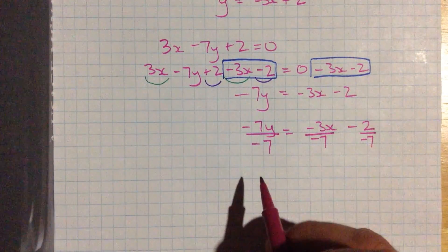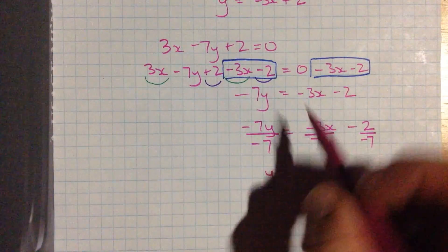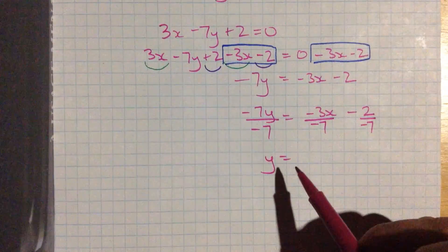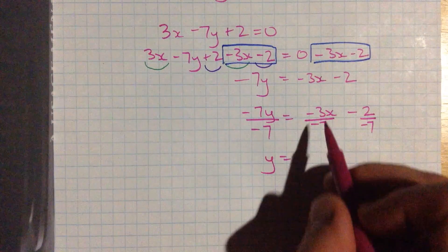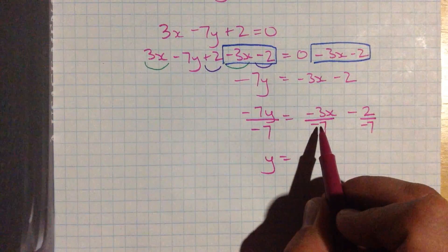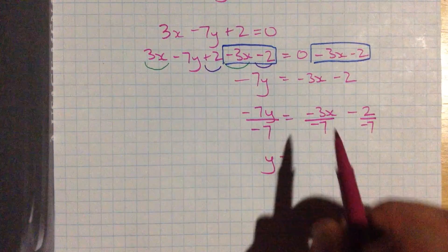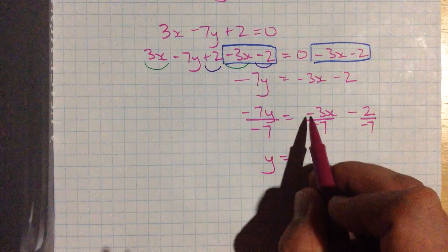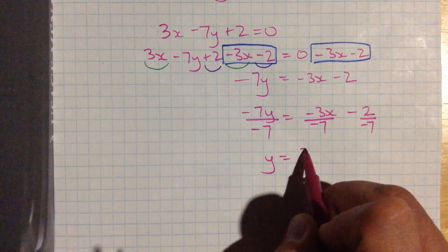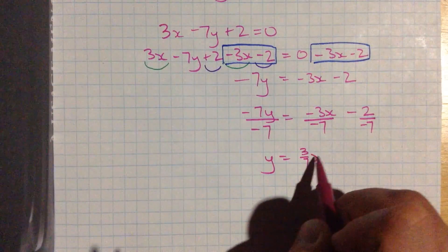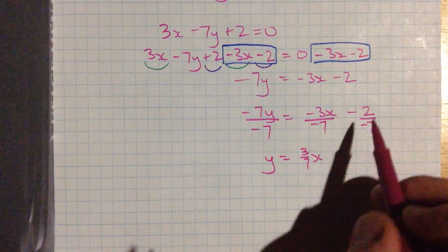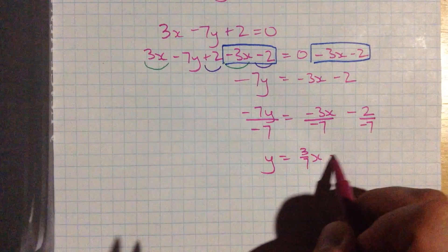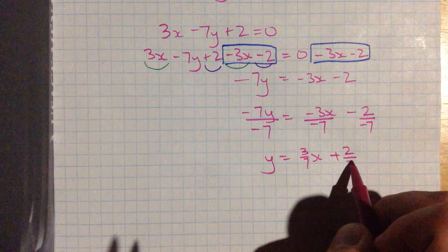Where you put your signs and that sort of thing. Negative 7 divided by negative 7. That's just 1. So this is now y, just like I wanted on this side all by itself. Here I've got negative 3 over negative 7 times x. Well, those negative signs are going to cancel each other out. And I'm left with 3 7ths x. And this is a minus 2 over negative 7. Again, 2 negative signs here. That's going to end up being 2 7ths.